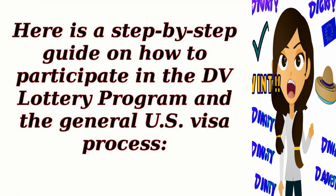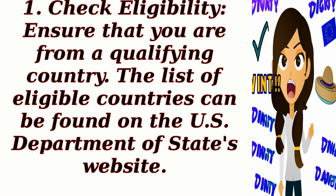Here is a step-by-step guide on how to participate in the DV lottery program and the general U.S. visa process. Step 1: Check eligibility. Ensure that you are from a qualifying country. The list of eligible countries can be found on the U.S. Department of State's website.